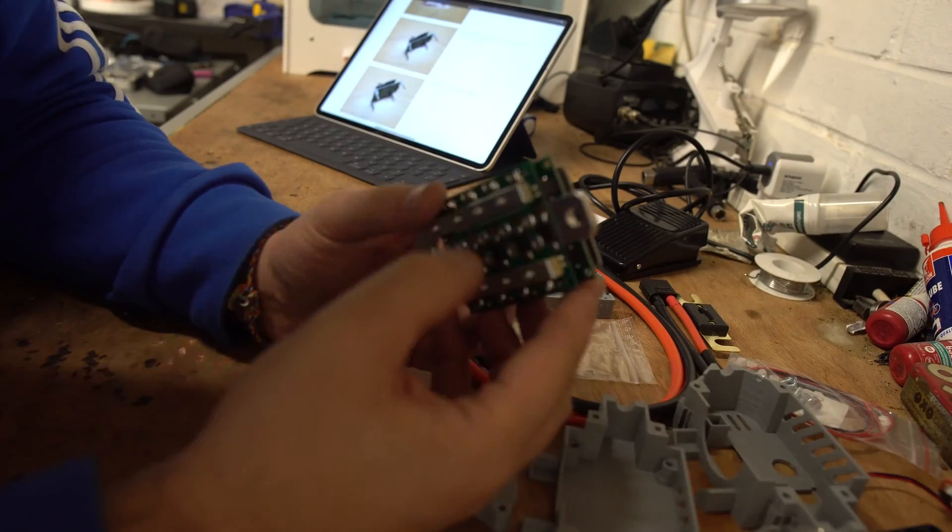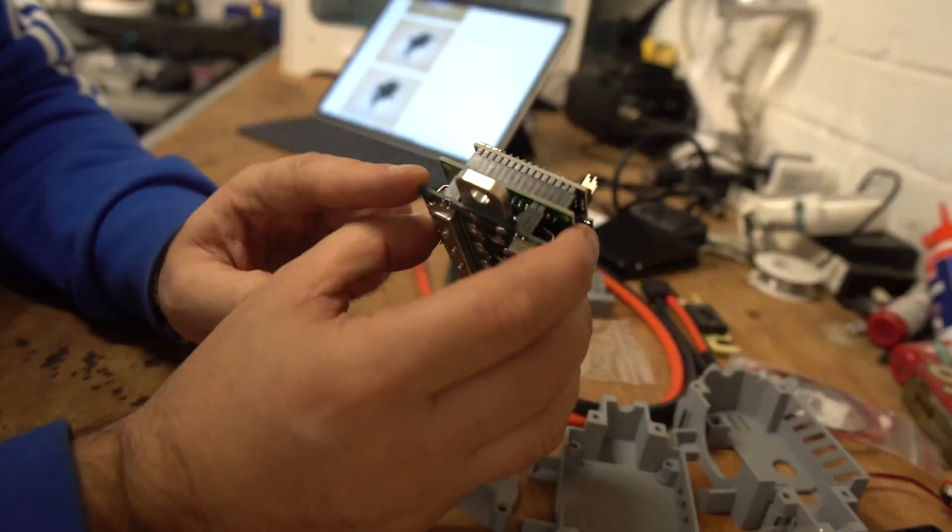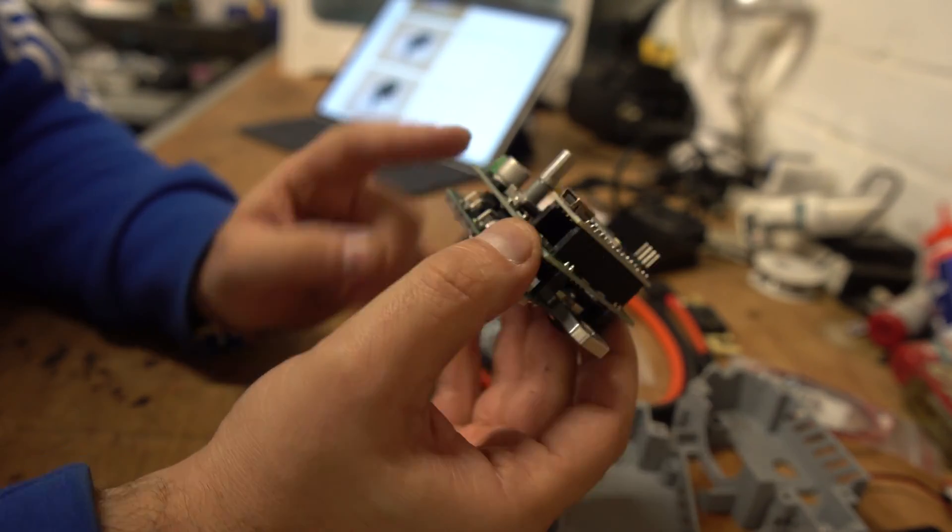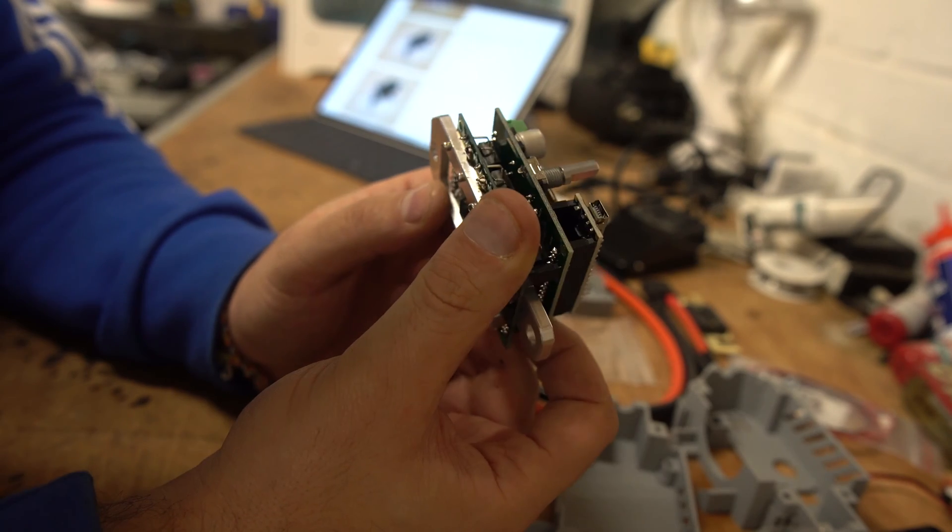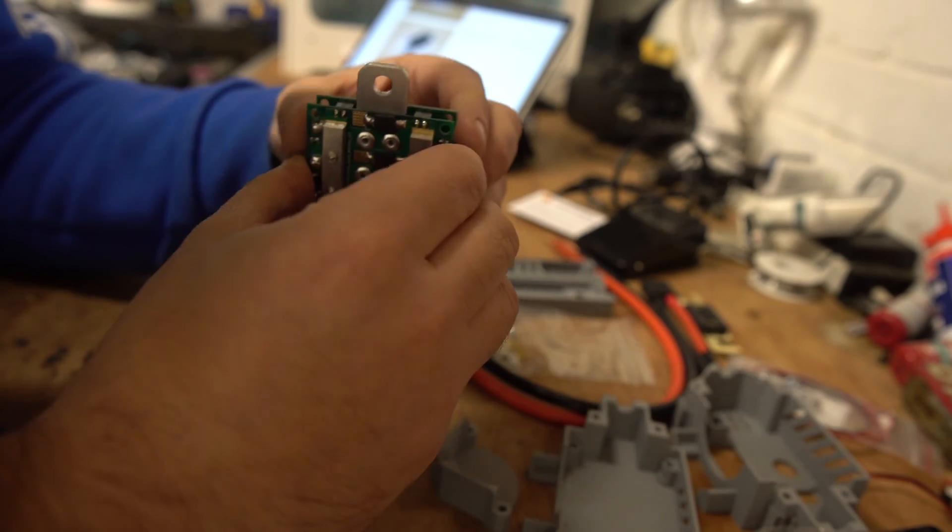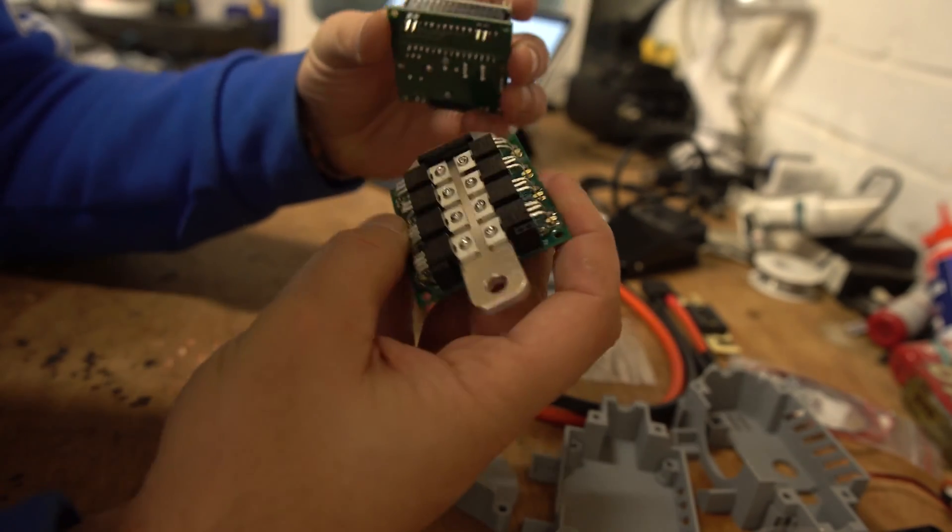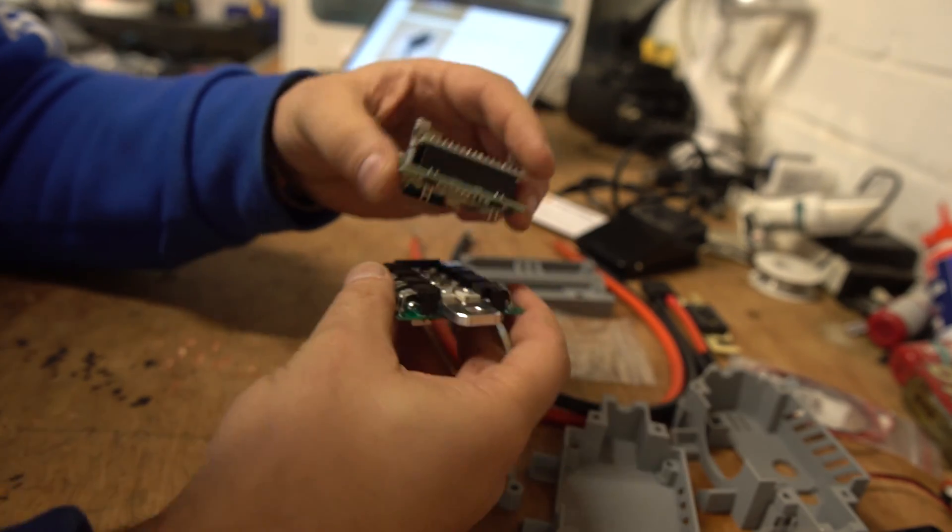One thing I've got to say guys before we start this, is it does come with a comprehensive set of instructions, full color bullet point instructions on the internet. Top work guys, I really do like that, we're going to follow those now while we build this. Let's get back to it guys. The first thing we've got to do is we've got to separate these two halves of the PCB assembly so that we can start modifying it for the case. So I think we just gotta do that, there we go.